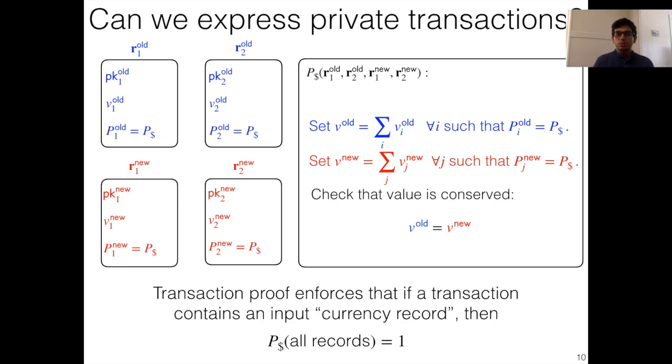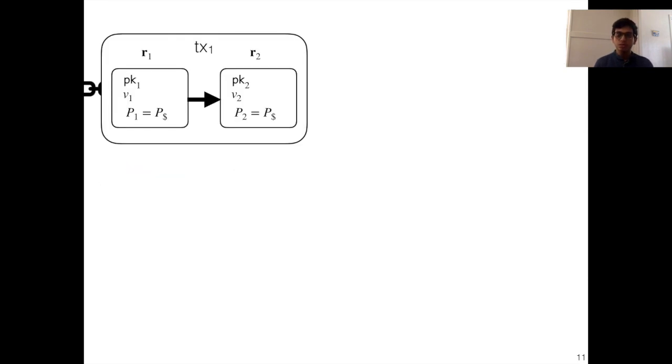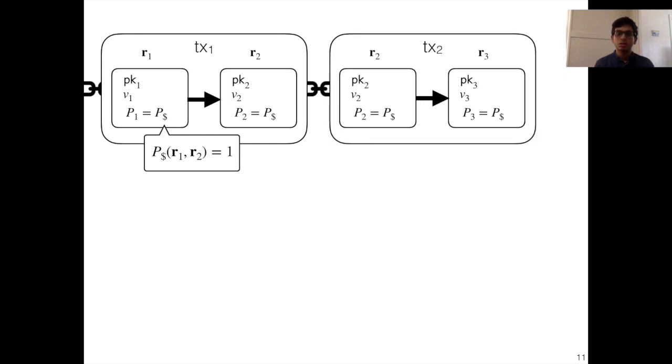Okay, let's see if this actually works by considering some transaction flows. So first, let's consider an honest transaction. So here, there's some user who has a record R1, and they want to spend it and create a record R2. So they create a transaction, and the transaction proof will assert that the value conservation predicate is satisfied. Okay, and then similarly, downstream, another user can spend R2 with the same mechanism. Okay, so clearly, honest user workflows are preserved.